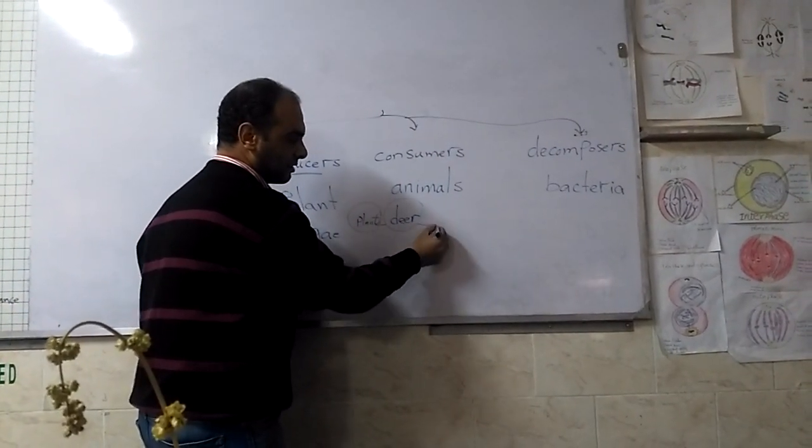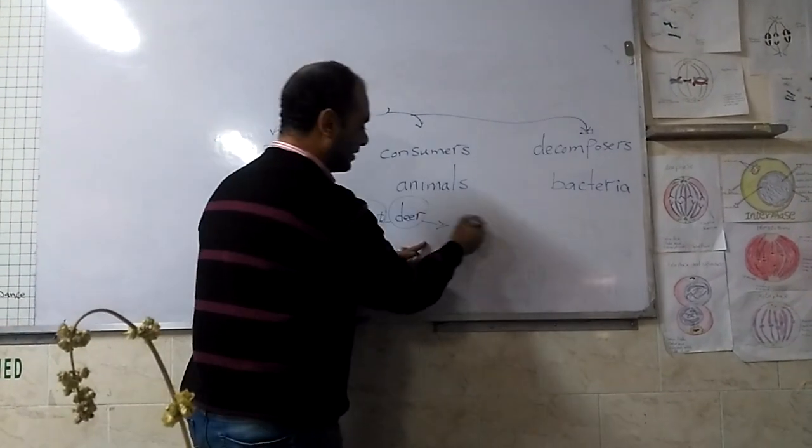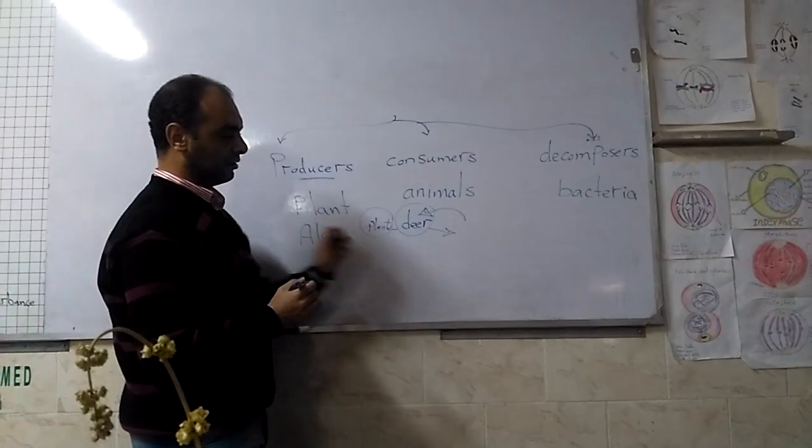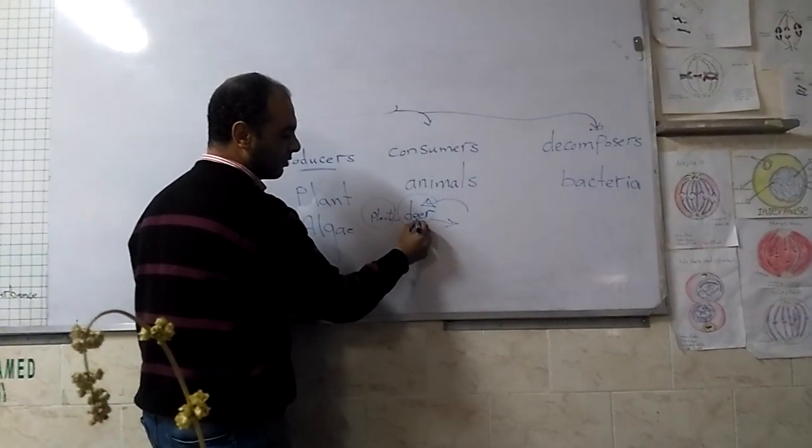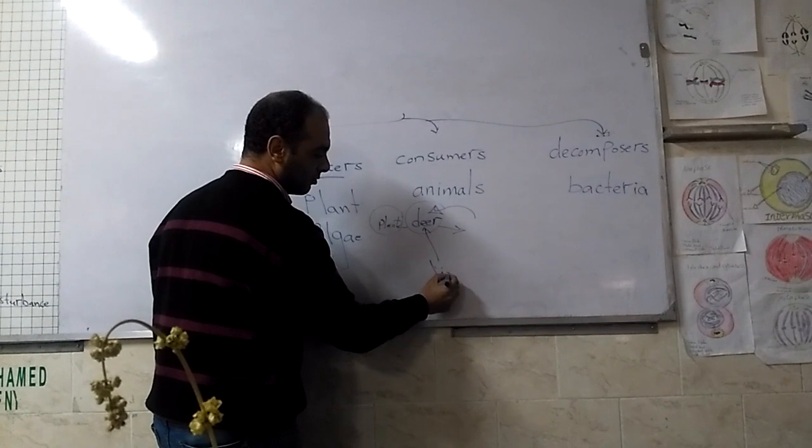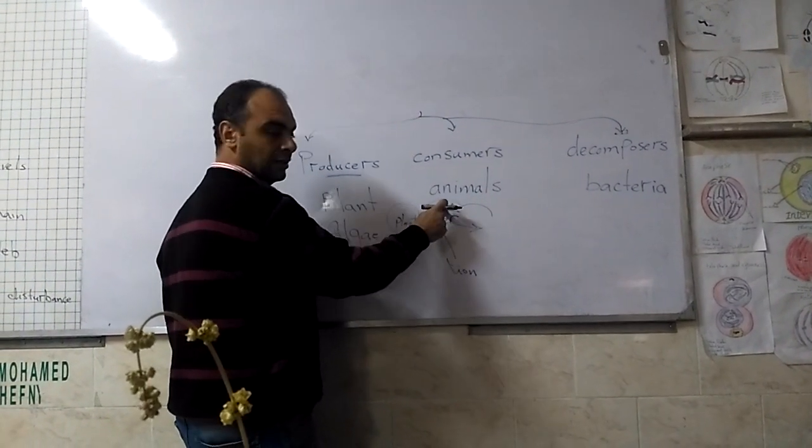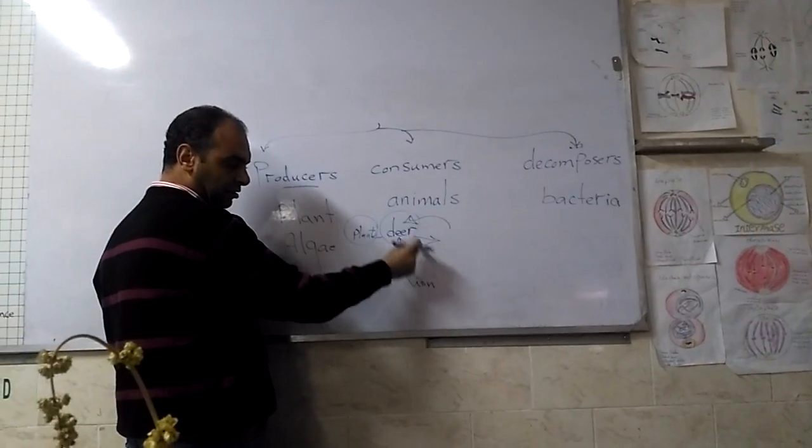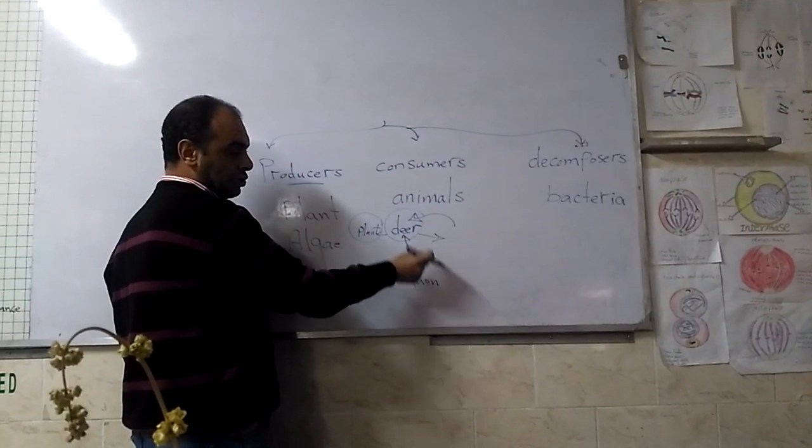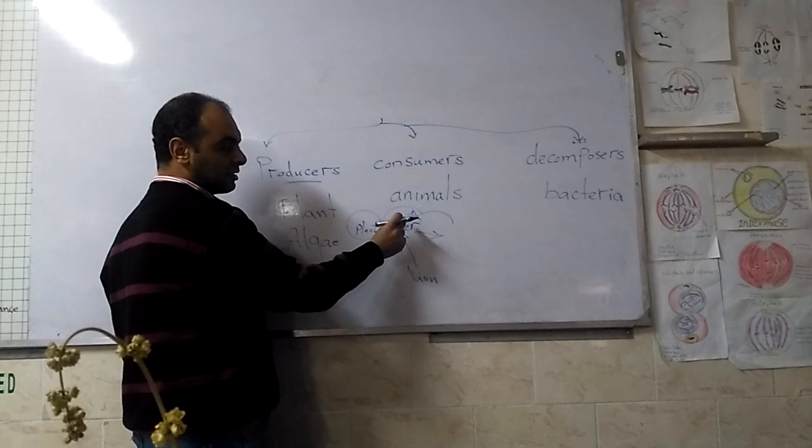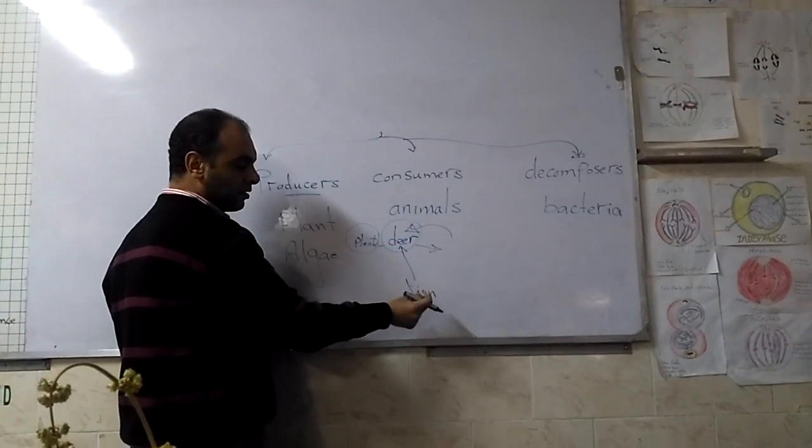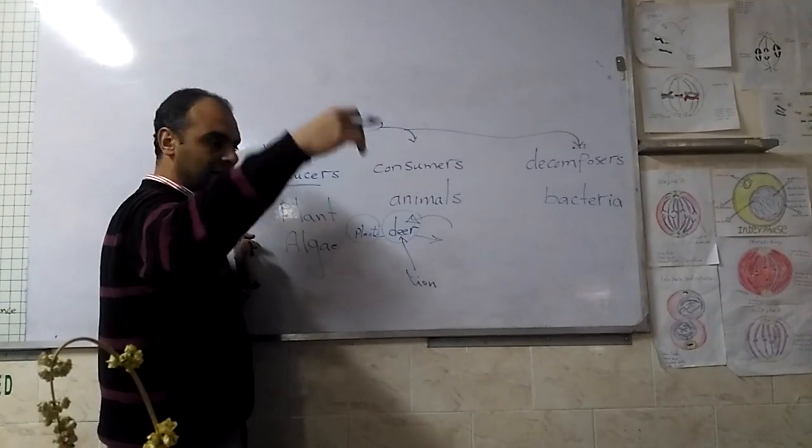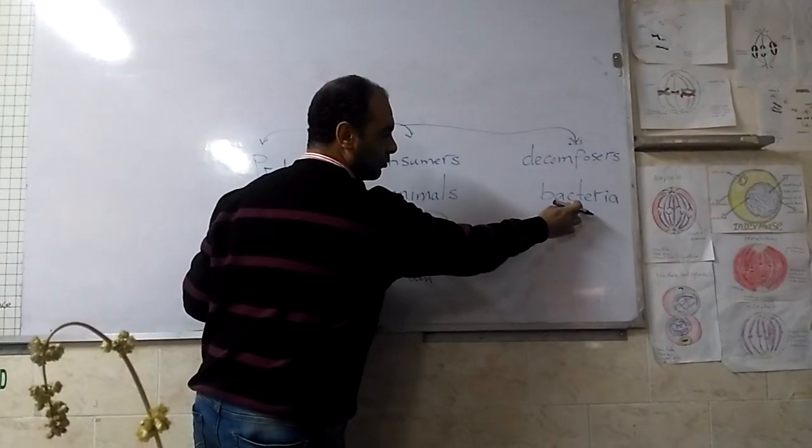After death of a living organism, bacteria will get energy from it. Maybe a lion feeds on the deer, so energy moves from deer to lion. We call these consumer 1, consumer 2, consumer 3, and so on, then reaching bacteria.